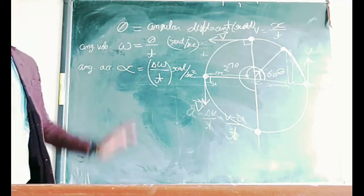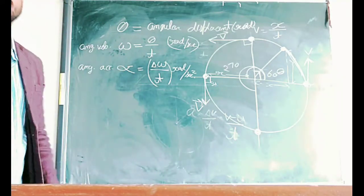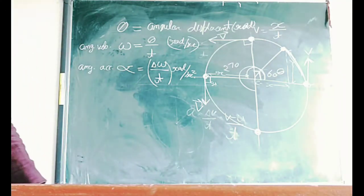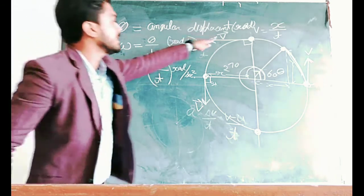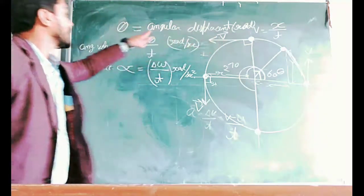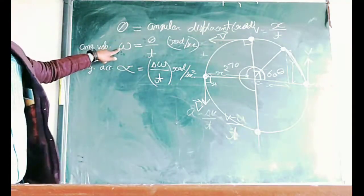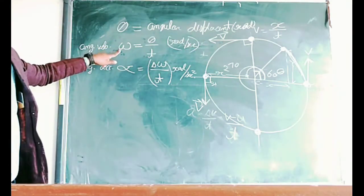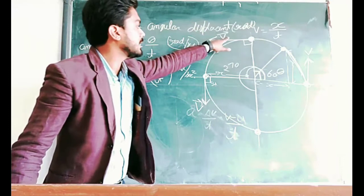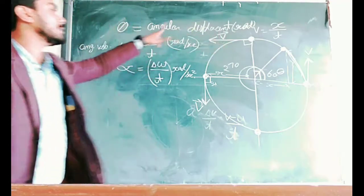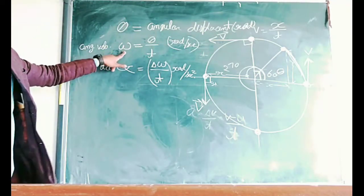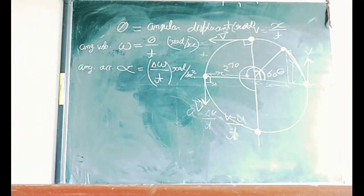Now we are going to derive a relation between linear velocity and angular velocity — that is, the relation between V and omega. Suppose a body is performing uniform circular motion with centre at O.